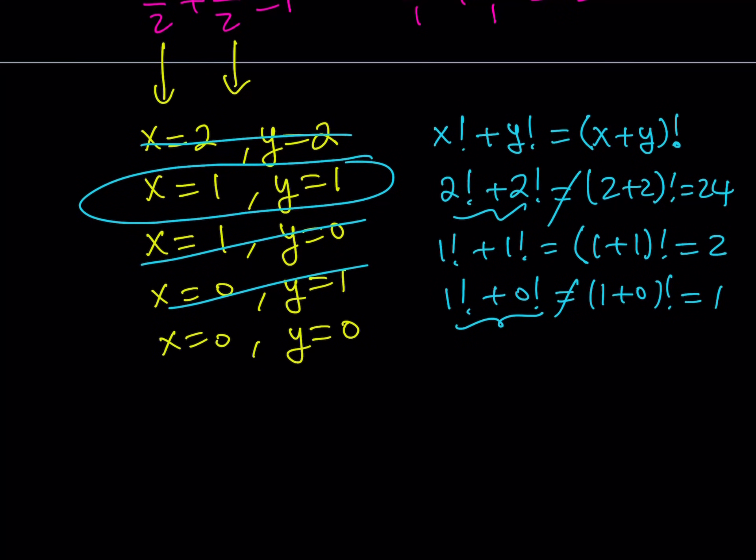Obviously, for the same reason because of the symmetry, 0, 1 is not going to work either. How about 0, 0? Well, 0 factorial plus 0 factorial is equal to 2. But 0 plus 0 is 0. 0 factorial is equal to 1. So these are not equal either. So the only solution we end up getting is 1, 1.